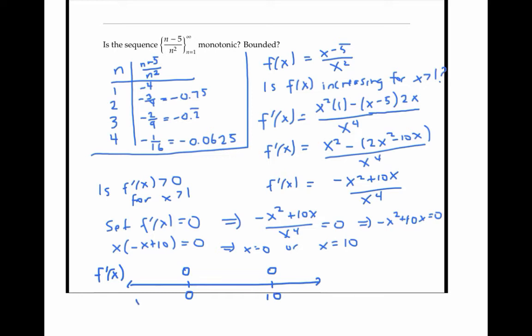like x equals negative one, one, and 11, I can see that f prime is negative for x less than zero, positive for x between zero and 10, and negative for x bigger than 10.